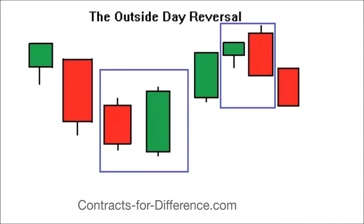You might have a down day first. If we look at the first blue rectangle on the left-hand side of the screen, you've got a red candle — that's a down day. Once that happens, you think: okay, it's a down day, we'll probably have another down day tomorrow.